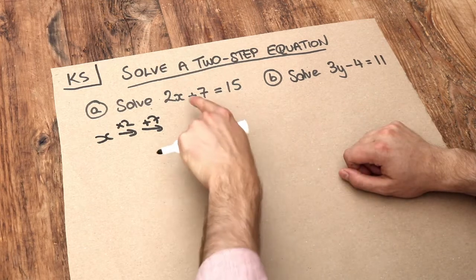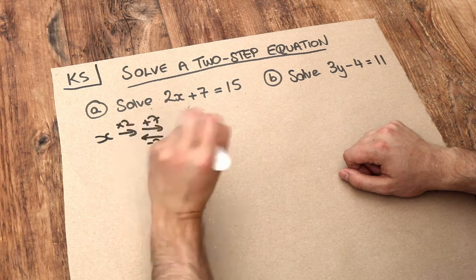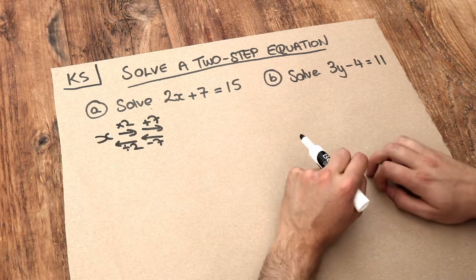Therefore, to get back to x, we need to do these in reverse order. We would have to minus 7 first, and then divide by 2 to undo that times by 2.